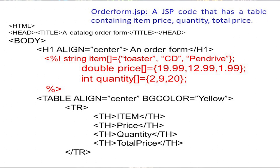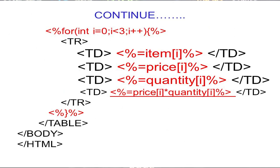To place all three array values into the table, we need a loop. We use a for loop: 'for (int i = 0; i < 3; i++)'. This loop runs three times, once for each item. The JSP scriptlet opens, and inside we write HTML table row (tr) and table data (td) tags.